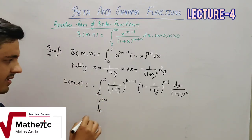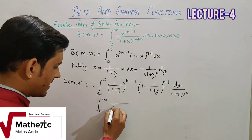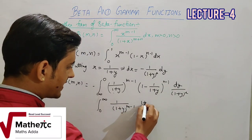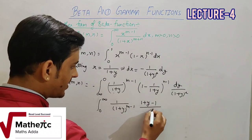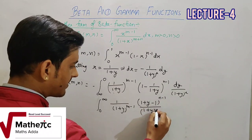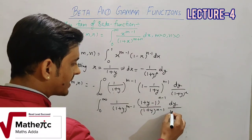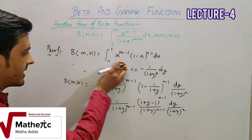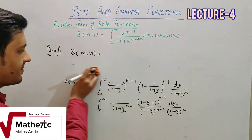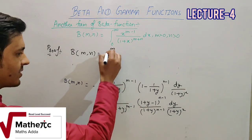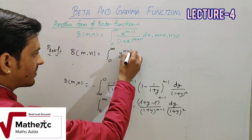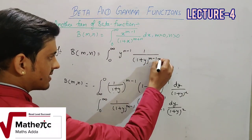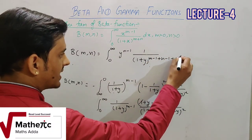Minus plus में convert होने पर, 1+y की power m−1 और (1+y−1)/(1+y) की power n−1, और dy/(1+y)² से simplify करने पर: integration 0 to ∞ of y^(n-1) और 1+y की power (m−1)+(n−1)+2 = m+n आती है।